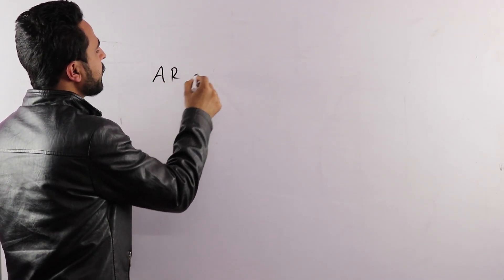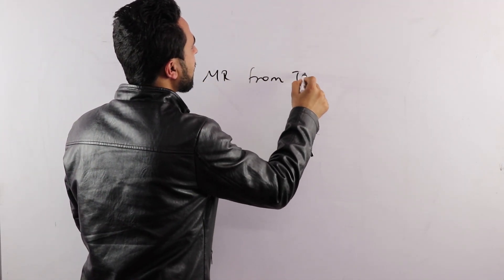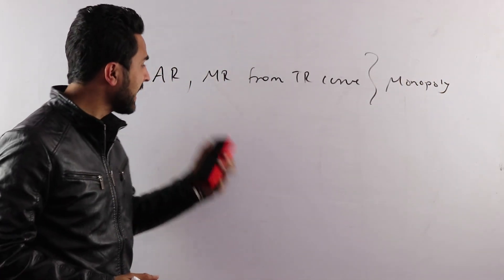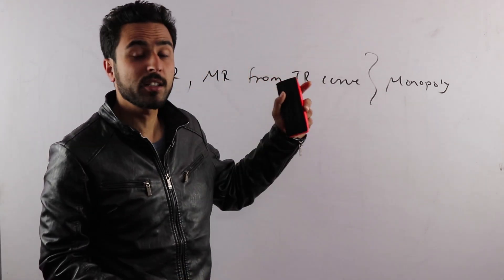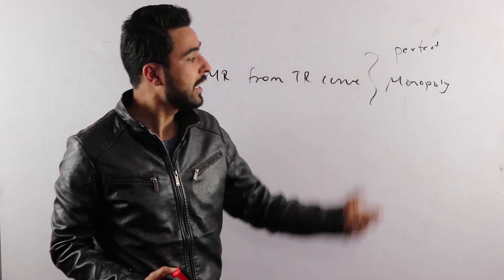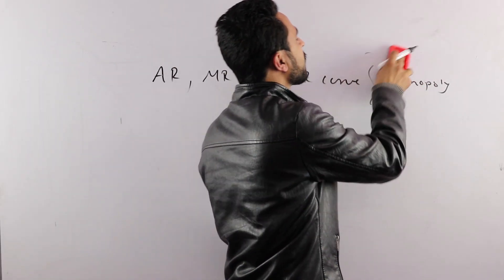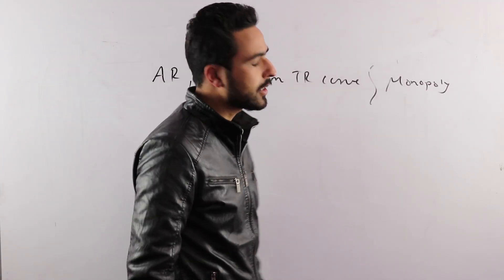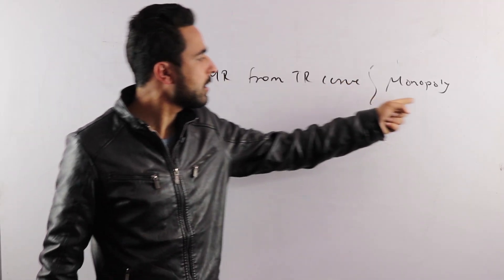Welcome to the 4th chapter on Market Revenue and Cost Curves. This chapter covers the derivation of AR and MR curves from the TR curve. In this video, we are going to derive AR and MR from the TR curve under monopoly.